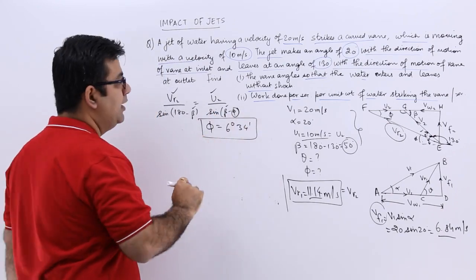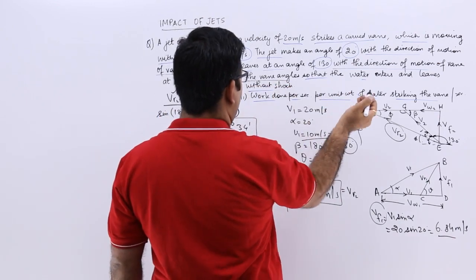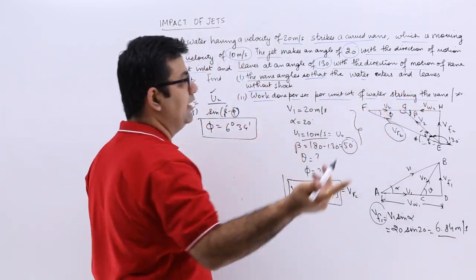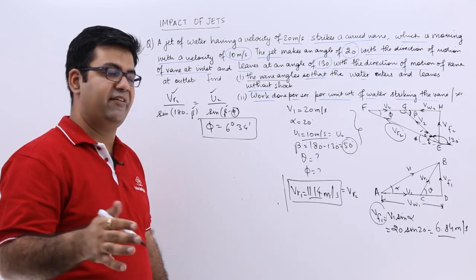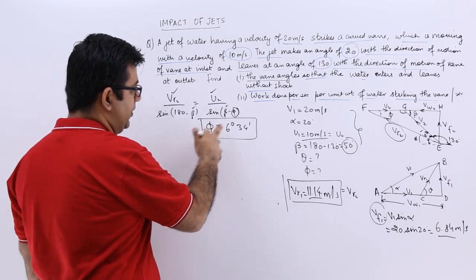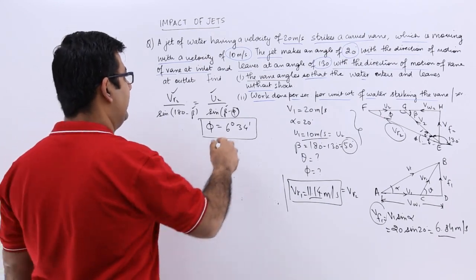So this is the blade angle at the outlet. So now we have found out the vane angles or blade angles at the entry and the exit. At the entry it was around 37 degrees and at the outlet it is about 6 degrees 34 minutes. So we are done with the first part.